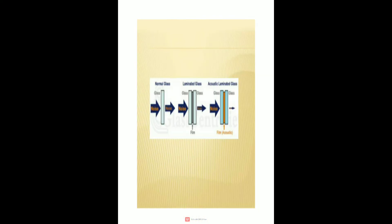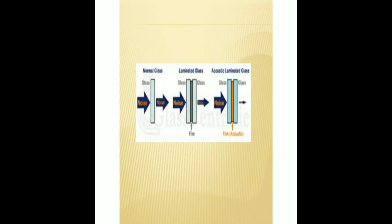This is the pictorial view of normal glass, laminated glass, and acoustic laminated glass. In normal glass, the noise output is the same as the input. In laminated glass, the noise is reduced due to the presence of a film. In acoustic laminated glass, the noise is reduced even further due to the presence of an acoustical film.